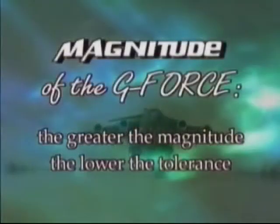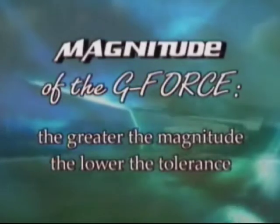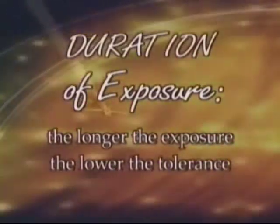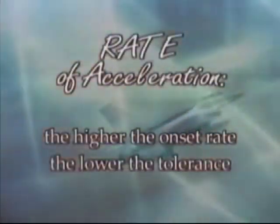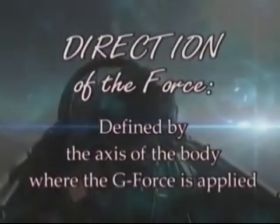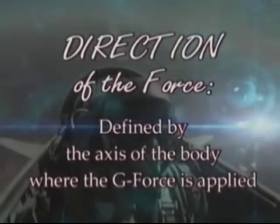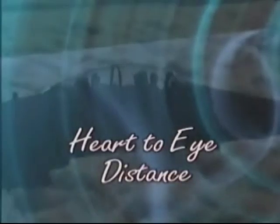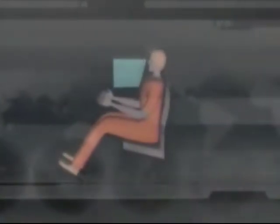There are several factors about G-forces that have important implications for individual tolerance limits, including: the magnitude of the G-force — the greater the magnitude, the lower the tolerance; duration of exposure — the longer the exposure, the lower the tolerance; rate of acceleration — the higher the onset rate, the lower the tolerance; direction of the force, defined by the axis of the body where the G-force is applied; and heart-to-eye distance — the shorter the distance between heart and brain, the greater the tolerance to positive vertical G's. A pilot seated in a reclined position has a greater tolerance to positive G's than a pilot in an upright position.